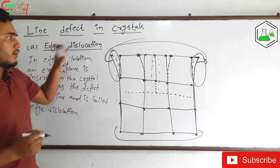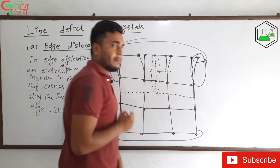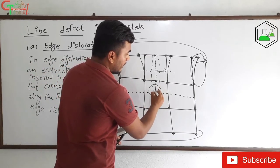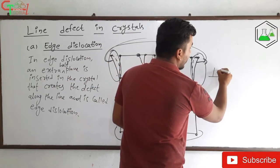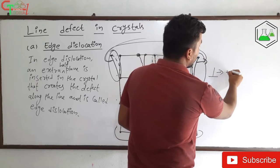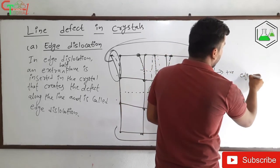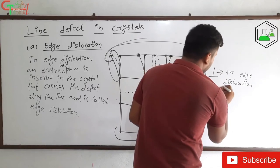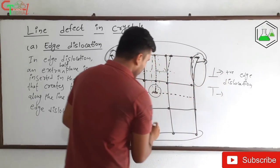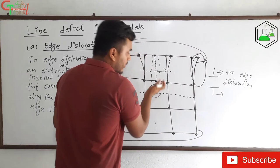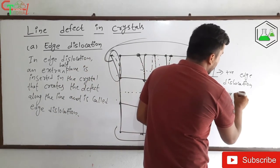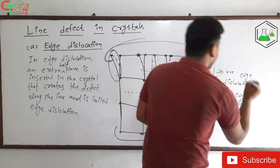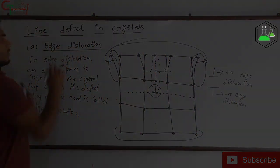If this half plane moves, it is called slip. If the half plane is inserted from the upper side, we get a reverse-T shape, and this is called positive edge dislocation. If the plane is inserted from the lower side — a non-reverse T — this is called negative edge dislocation.